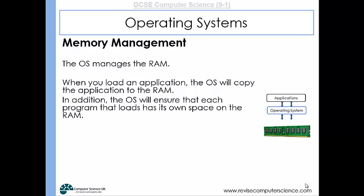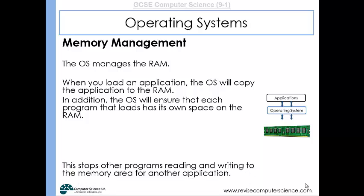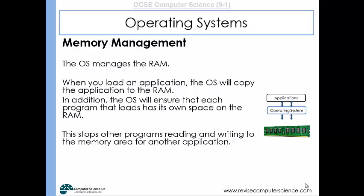The operating system will ensure that each program that loads has its own space on the RAM. It basically prevents programs from reading and writing onto the memory area of other applications, so they all have their own compartment on the RAM. It's also responsible for managing virtual memory. If the RAM gets full, the operating system makes use of some secondary storage to act as RAM.